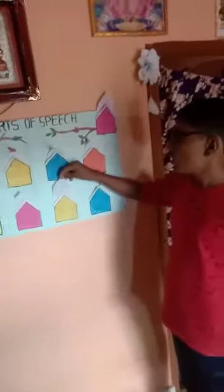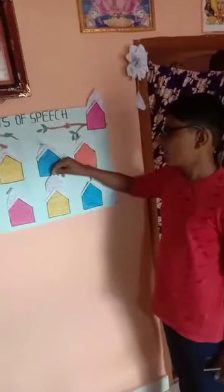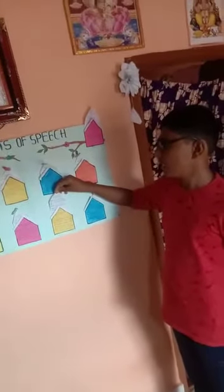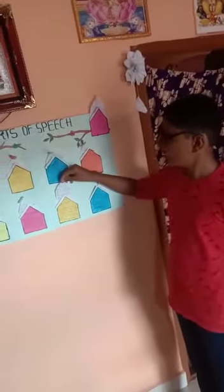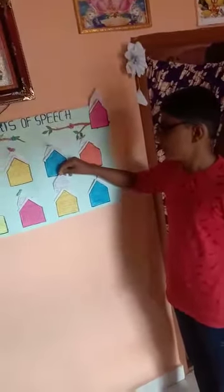Examples of conjunctions: and, or, but, because, so, yet, unless, since, if.